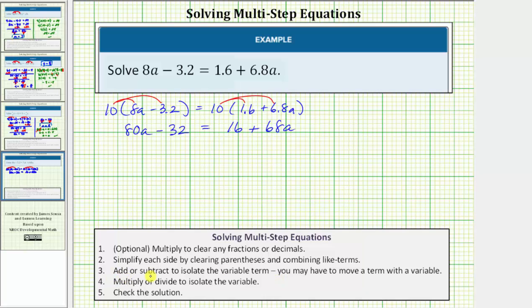Step three, we add or subtract to isolate the variable term. Remember our goal is to isolate the variable on one side of the equation. And we cannot do this if we have variable terms on both sides. So let's undo the plus 68a on the right side of the equation by performing the opposite or inverse operation. Well the opposite operation of plus 68a would be minus 68a. So we'll subtract 68a on both sides of the equation.